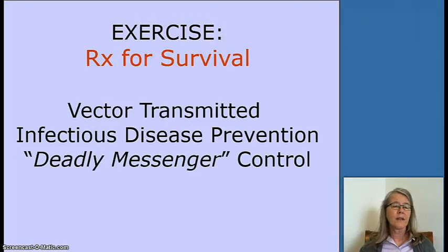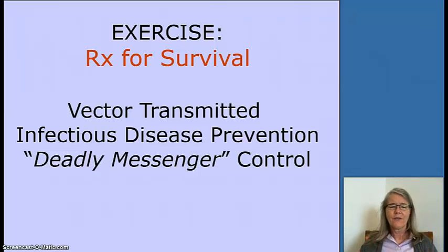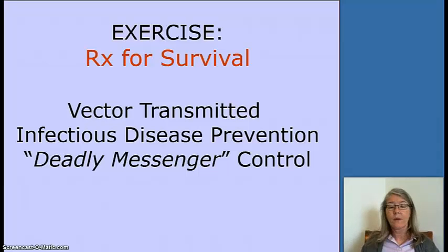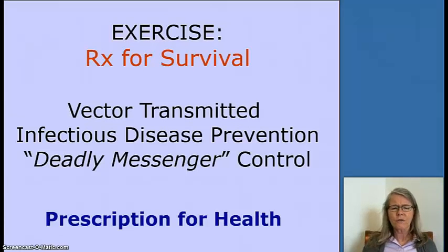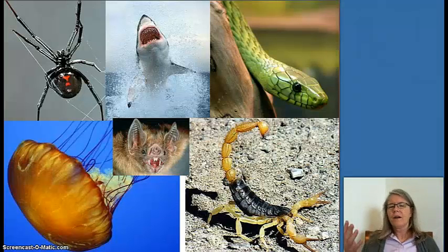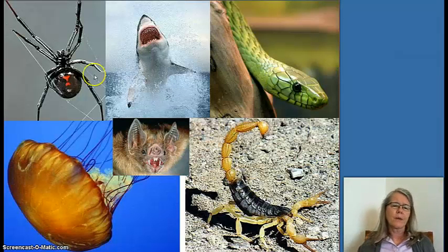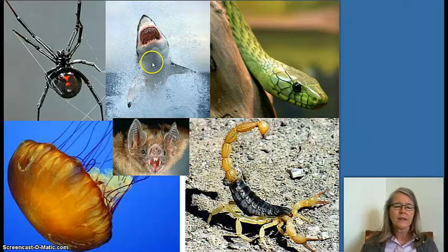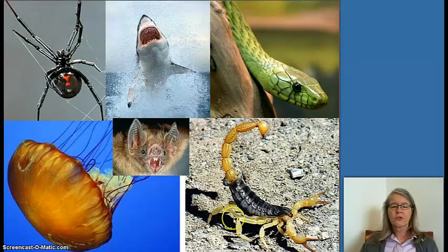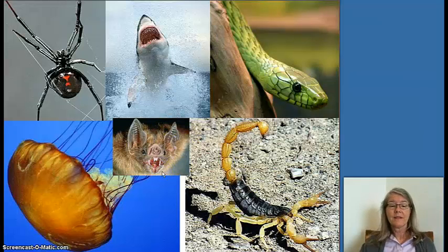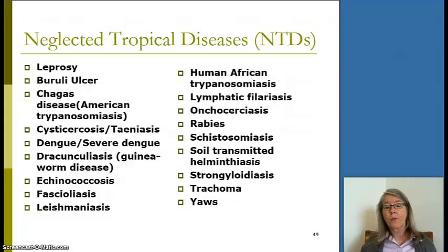Here's our exercise — Rx, a prescription for survival. Vector-transmitted infectious disease prevention: we're going to debate the best techniques for an intervention and look at our vectors. This is just the ordinary things: black widow, great white shark, Portuguese man-of-war jellyfish, scorpion, green viper, rabies bat — these are hazards, but they're not neglected tropical diseases. They're not the focus here.